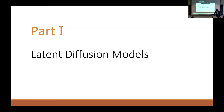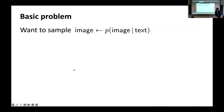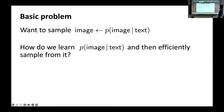So what is the basic problem that we want to solve? We want to sample an image from text. How do we learn this probability distribution of an image conditioned on text, and then efficiently sample from it?